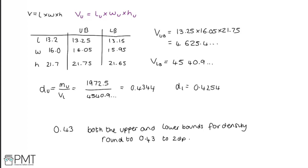For the mark scheme: one mark is awarded for finding one of the bounds, such as the upper bound for mass. A second mark is for finding the bounds for volume. A third mark is for a correct process to find the bounds for density using the right formula. A fourth mark is for both correct bounds for density to three significant figures, and the final mark is for the conclusion and final answer of 0.43.